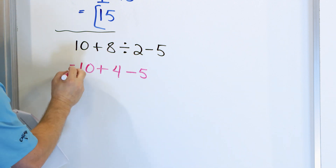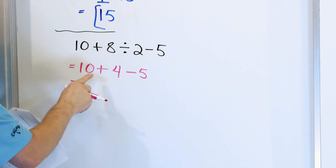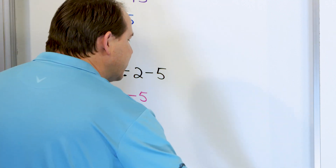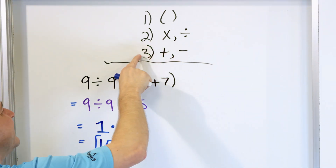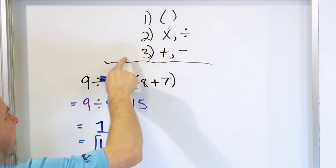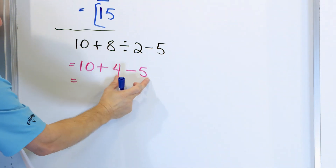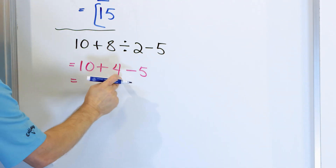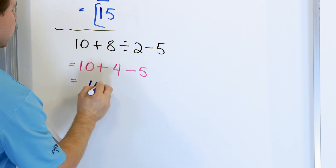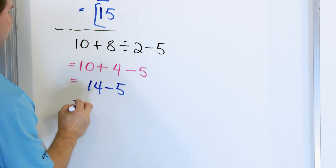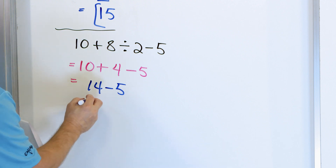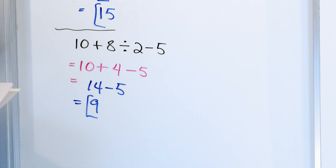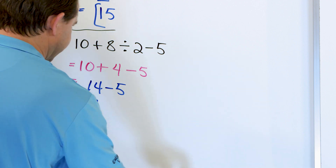All we did is that one step first — everything else is rewritten. Now we have 10 plus 4 minus 5. Addition and subtraction are at the same priority level, so we do them left to right. We don't do subtraction first. 10 plus 4 is 14, then 14 minus 5 is 9. That is the final answer: 9.